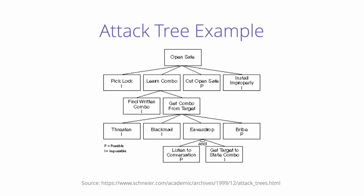The attacker can use lock picking, cut open the safe, or install the safe improperly so it can be opened later. The attacker can also learn the combination key — perhaps by finding it written somewhere, or by getting it from the safe owner. To get the combination from the owner, the attacker can threaten, blackmail, bribe, or eavesdrop to make the owner divulge the combination.